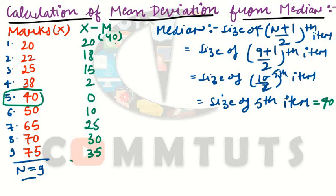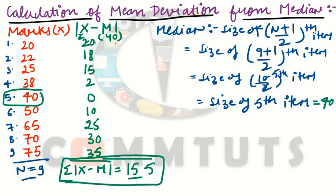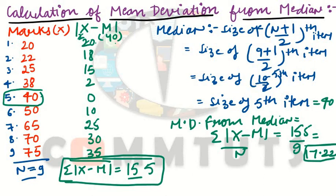Next step is the sum total: summation |x − m| = 155. The formula for mean deviation from median is summation |x − m| divided by n. So that is 155 divided by 9, which gives mean deviation from median = 17.22.